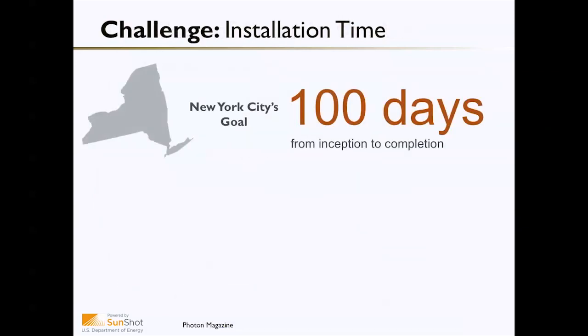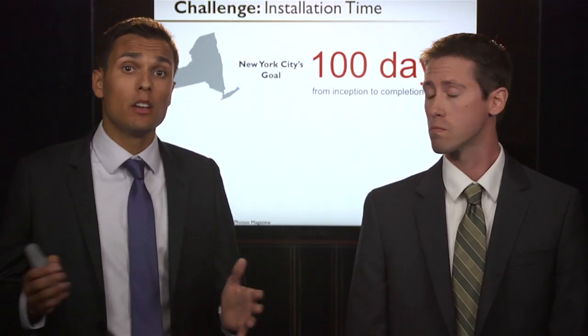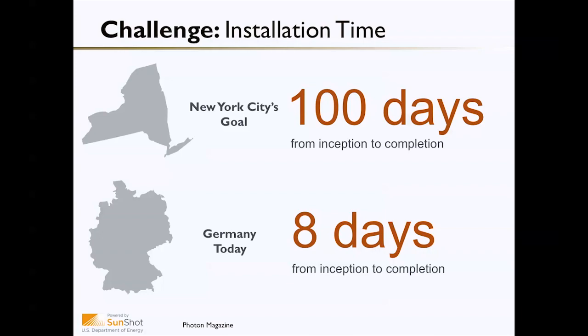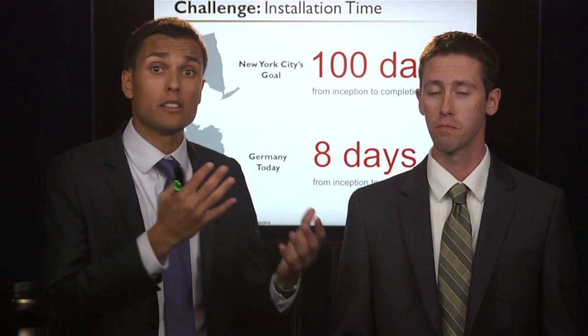Where do soft costs actually play out in the real world? One way is in the amount of time it takes to go through the entire process of designing an installation, permitting it, getting it installed, interconnecting it to the utility grid, and bringing it online. For example, New York City launched a program called 100 Days of Solar to bring the time from when a homeowner or business decides to install solar to when it's actually up and running down from a year — which it had been previously — to 100 days, and they were successful. Still, this is far longer than Germany, where many residential installations can go in in as little as eight days.